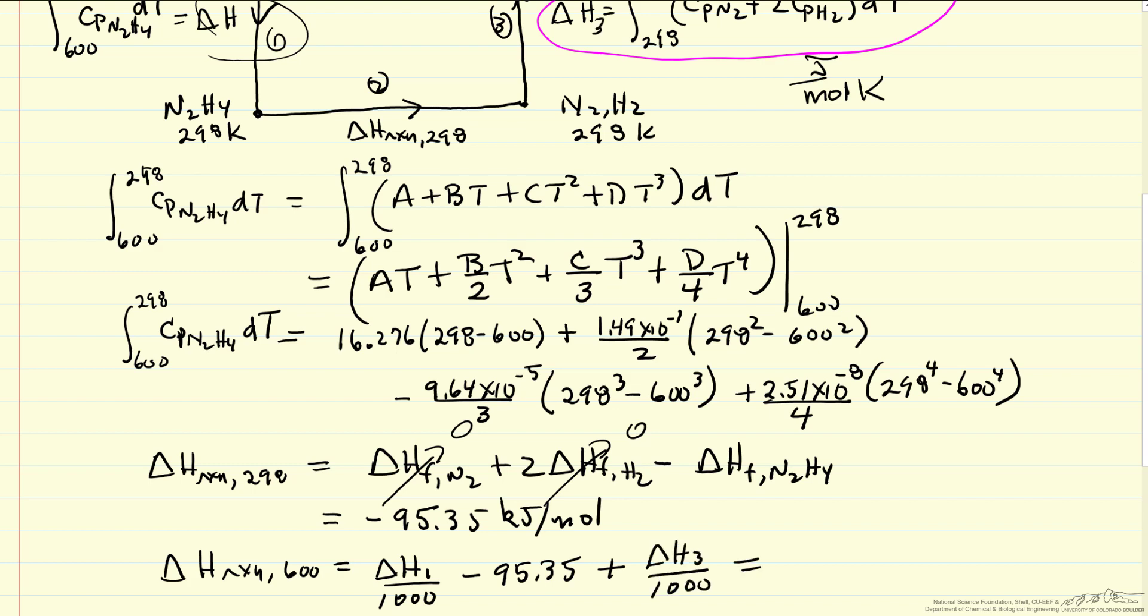When I substitute the numbers and I use the spreadsheet, I'll show you in a second here, I get 88.7 kilojoules per mole for heat of reaction. So you see the heat of reaction changes, not dramatically, but it does change over 300 Kelvin, from minus 95 to minus 89 essentially.